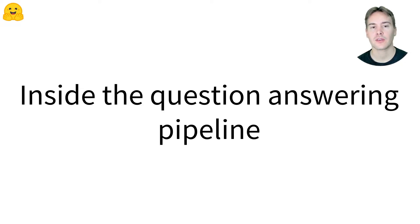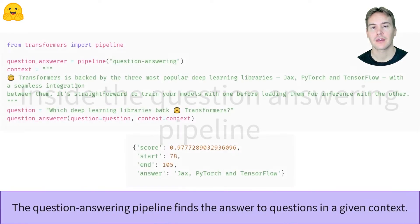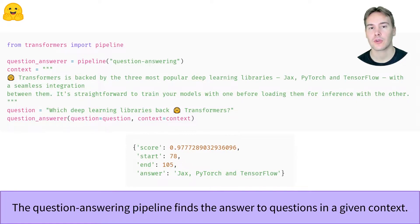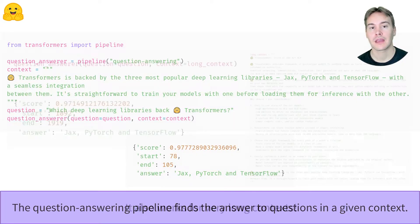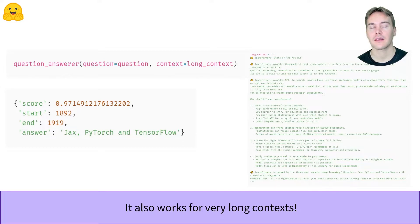Let's have a look inside the question answering pipeline. The question answering pipeline can extract answers to questions from a given context or passage of text, like this part of the transformers repo readme. It also works for very long contexts, even if the answer is at the very end, like in this example. In this video, we'll see why.